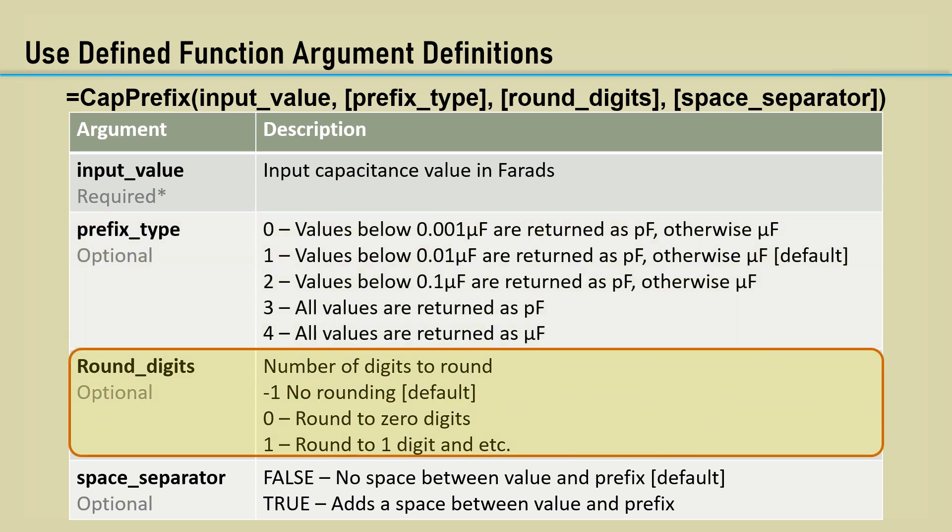The argument is optional and the default is one. The round digits argument is also optional and defaults to minus one, which is no rounding. The integer input is simply how many digits you want to round to. Most of the time,